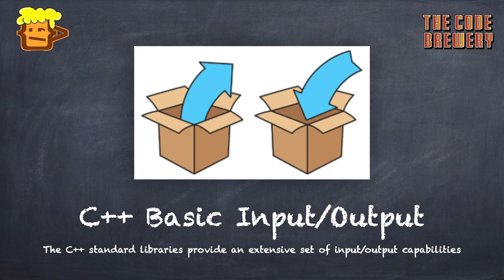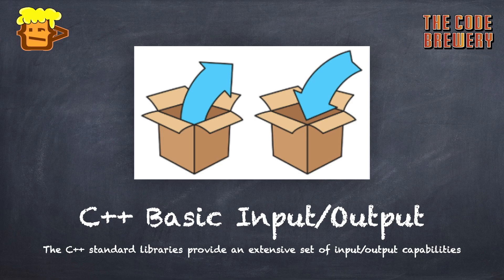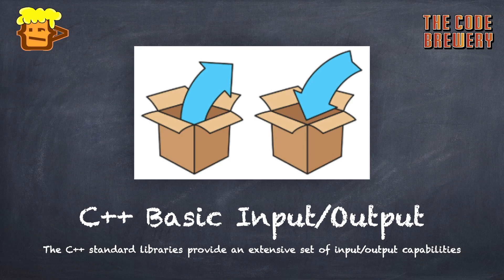C++ input/output occurs in streams, which are sequences of bytes. If bytes flow from a device like a keyboard, disk drive, or network connection to main memory, this is called an input operation. If bytes flow from main memory to a device like a display screen, printer, disk drive, or network connection, this is called an output operation.